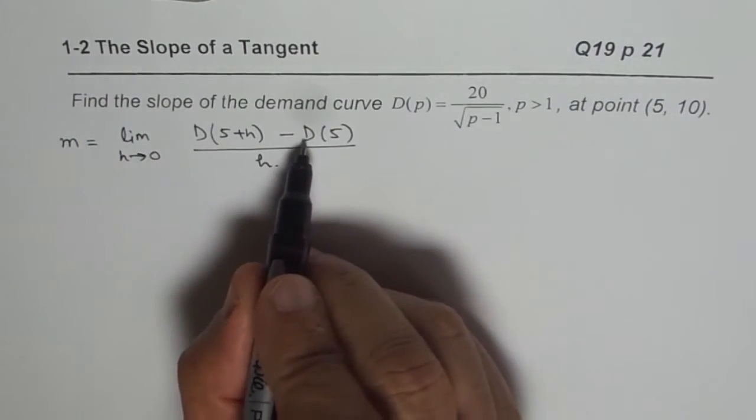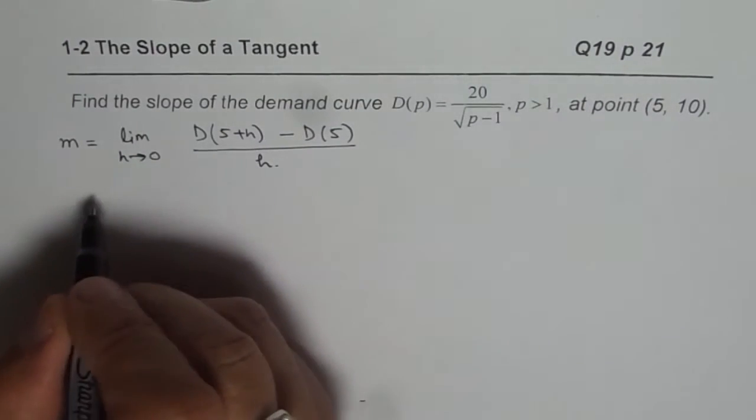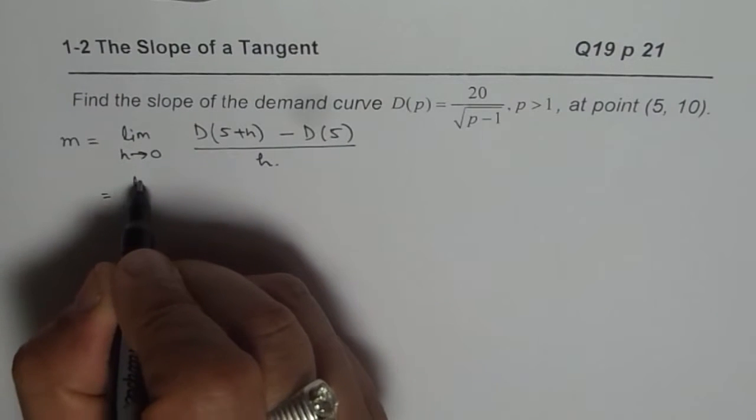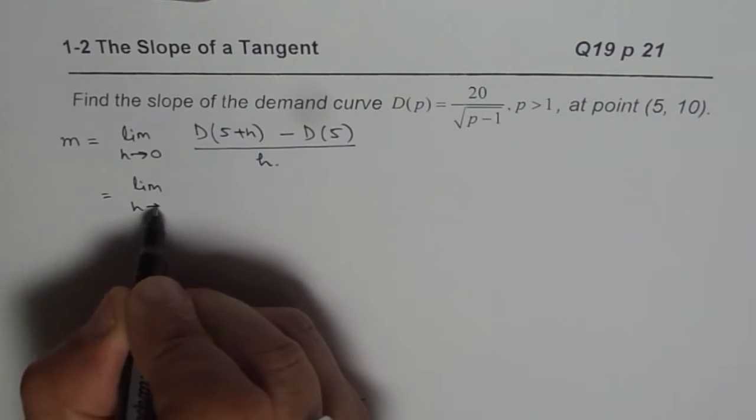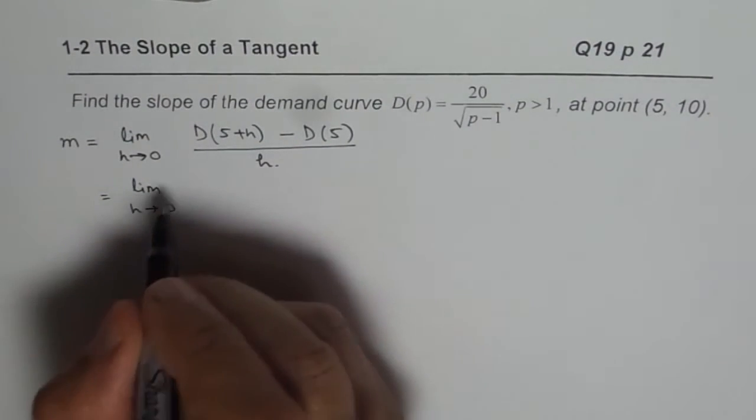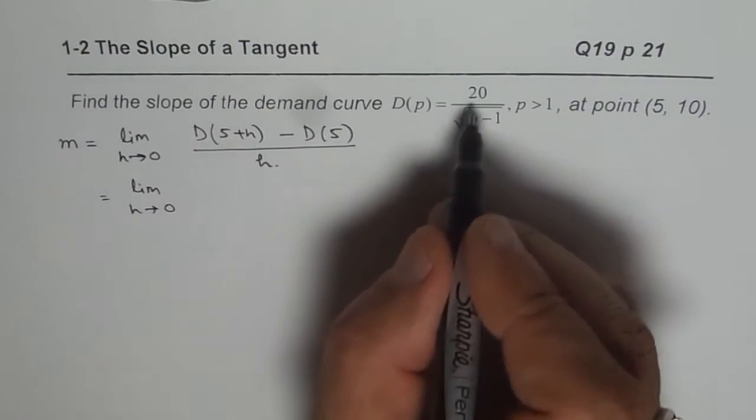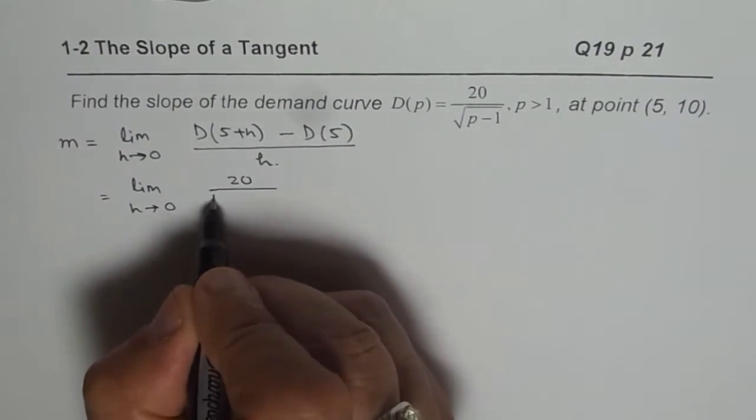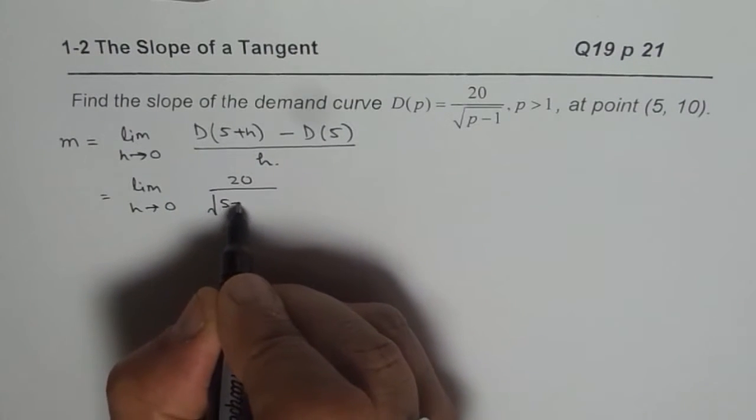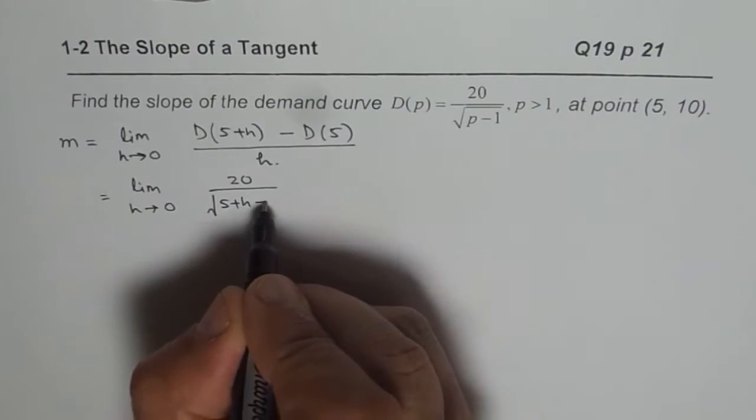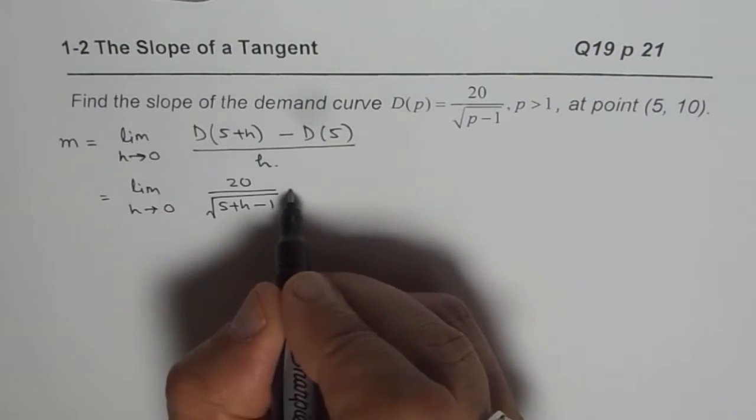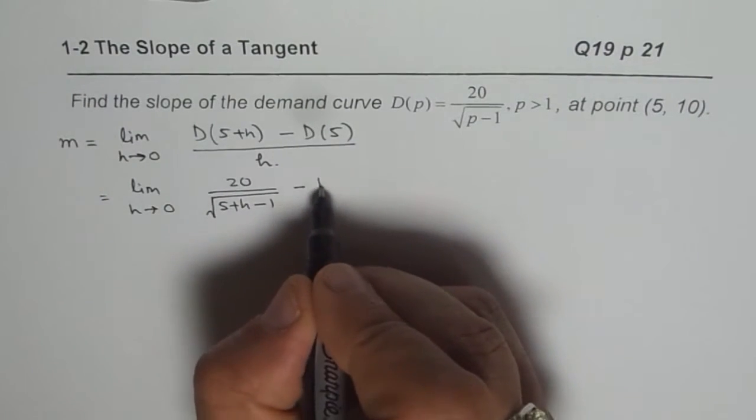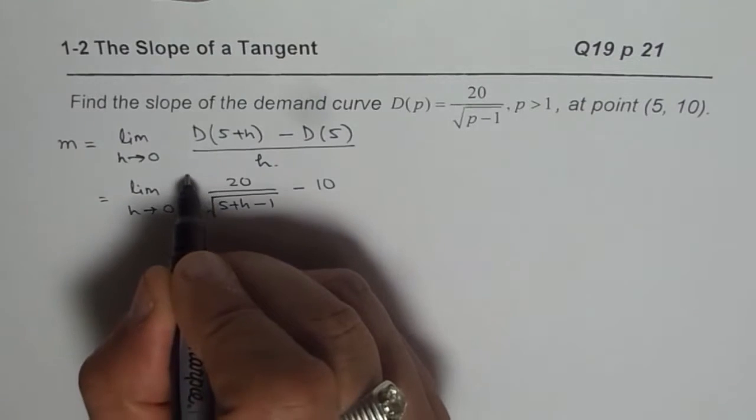So we have D(5 + H) minus demand value at 5 divided by H. We are already given D(5) is 10. So we can now substitute the given value 5 plus H in our equation. So we get 20 divided by, instead of P, we will write 5 plus H minus 1, minus D(5) is 10.